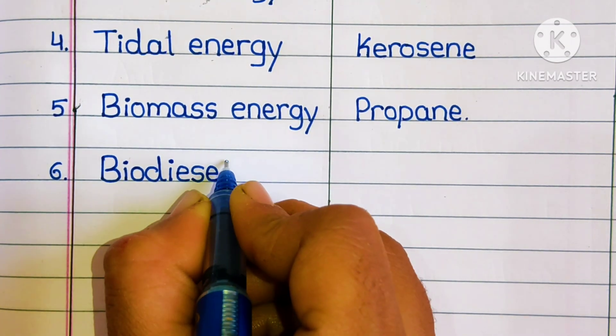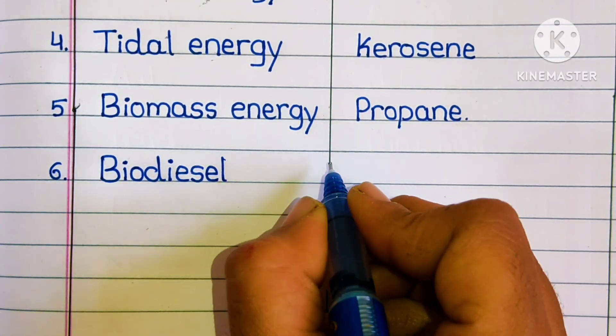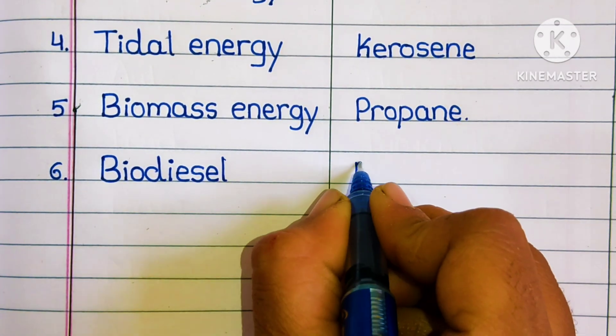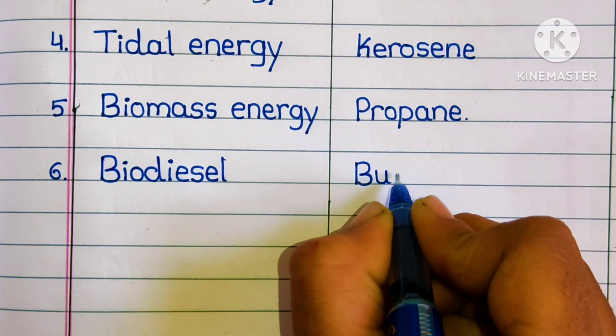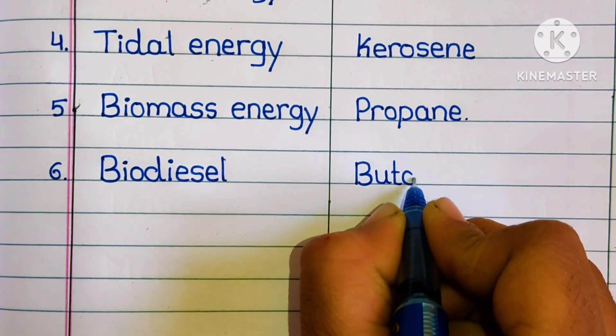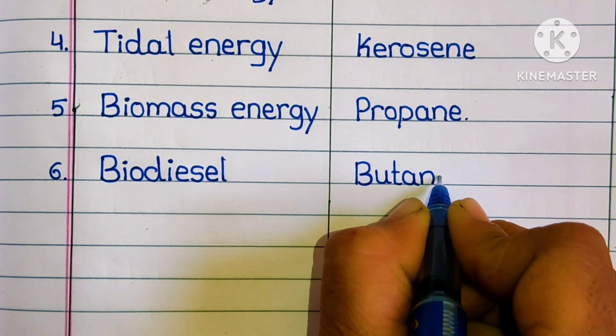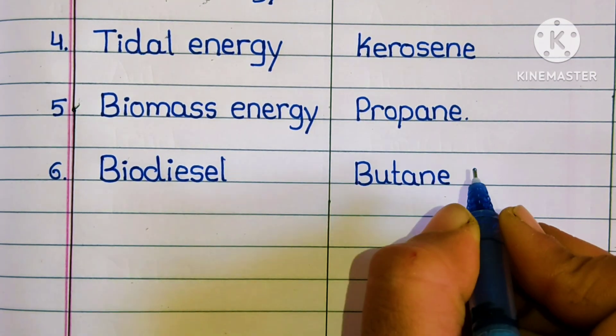Sixth one: biodiesel is a renewable resource. And non-renewable resource is butane.